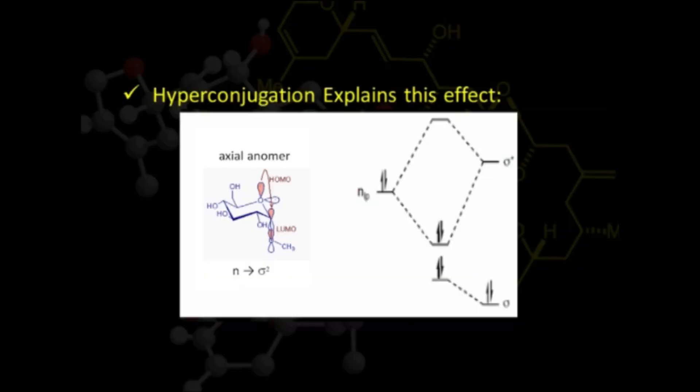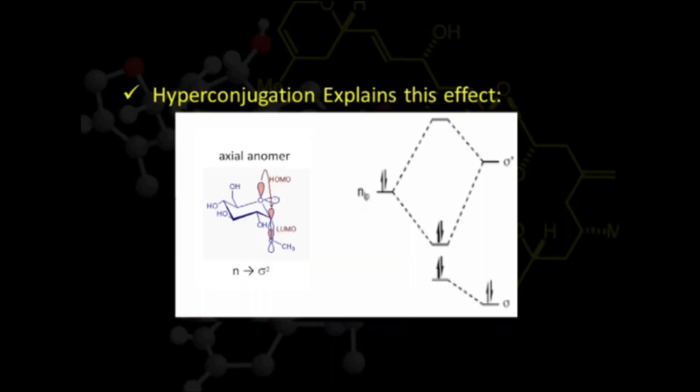Why does this happen? Once again, hyperconjugation helps us understand. In the case of the axial anomer, the two orbitals are lying parallel to each other, so hyperconjugation is possible. In the case of the equatorial anomer, the two orbitals are lying almost orthogonal to each other, so there is no possibility of extended MO formation and hence no hyperconjugation stabilization. Therefore, the axial anomer is more stable due to hyperconjugation.